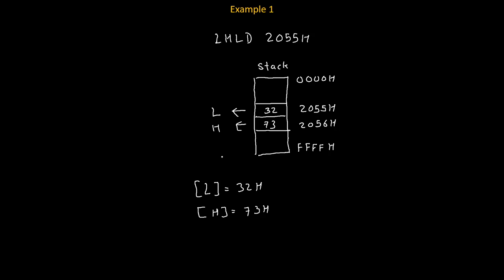So let's come back to our original instruction. So in LHLD 2055, original address is 2055 and next address is 2056. So 2055 gets loaded to L and the content of 2056 gets loaded to H.